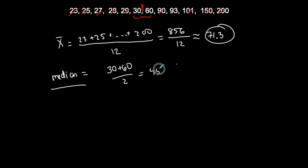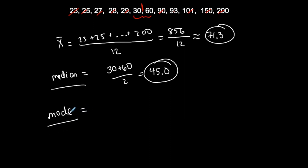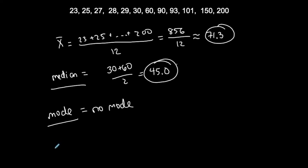So 30 plus 60 divided by 2 equals 45. My median is 45.0, following my rounding rule. So: mean is 71.3, median is 45. For the mode — is anything repeated? Looking through the data set: 23, 25, 27, 28... nothing is repeated. Everything appears one time, so I have no mode.